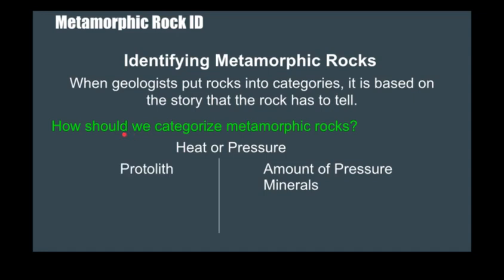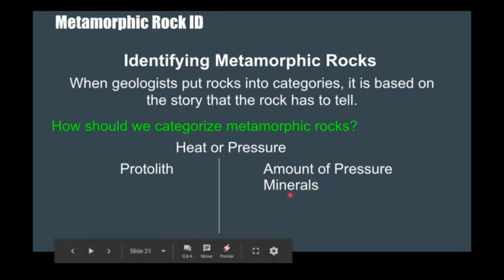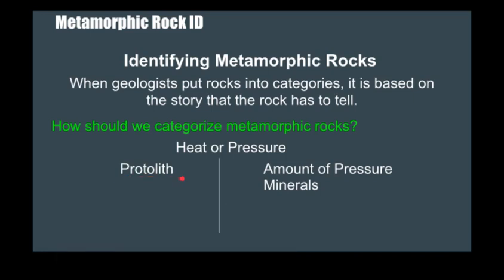Some of the things you want to think about are: was heat or pressure the dominant player in metamorphosing this rock? Sometimes it's hard to distinguish. Then you can think about how much pressure was applied and what kind of minerals are present. The minerals are really going to be the true storytellers in these rocks — they tell you about the heat and pressure conditions that generated the metamorphic rock, and give you clues about the protolith, the rock that came before.